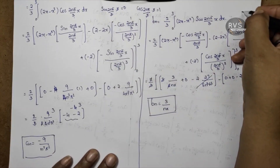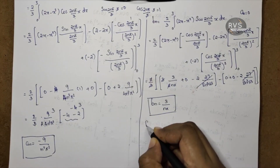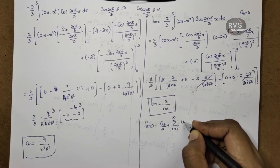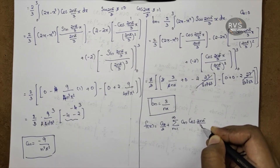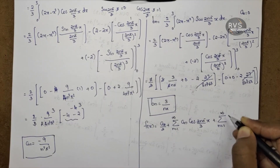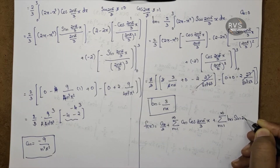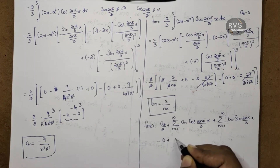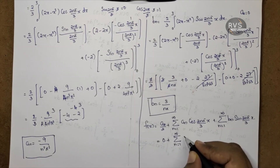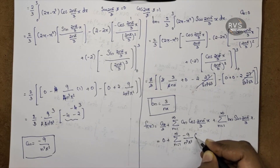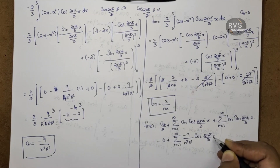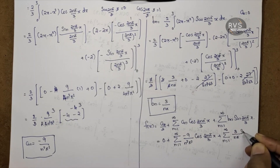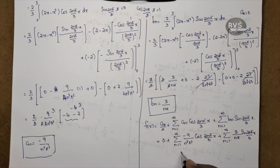Therefore the final Fourier series is: F of x equals a0 by 2 plus summation n equal to 1 to infinity of an into cos 2n pi by 3x, plus summation n equal to 1 to infinity of bn into sin 2n pi by 3x. Substituting: an equals minus 9 by n squared pi squared, and bn equals 3 by n pi into sin 2n pi by 3x.